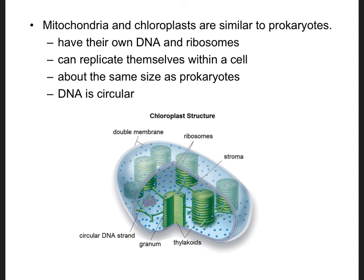She has quite a bit of evidence to support this theory. Both mitochondria and chloroplasts are very similar to prokaryotes. Both have their own DNA separate from the nuclear DNA found in the nucleus, and they also have their own ribosomes, meaning they can each make their own proteins without using nuclear DNA. Both mitochondria and chloroplasts can replicate themselves within a cell, much like a prokaryote would. They're about the same size as prokaryotic cells. Additionally, prokaryotes have a circular chromosome, whereas our DNA is linear — and the DNA inside mitochondria and chloroplasts is also circular. This is what we call the endosymbiont theory: that both mitochondria and chloroplasts evolved from prokaryotes that were engulfed by early eukaryotes.